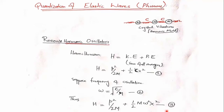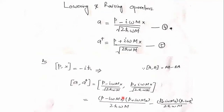Now we have the Hamiltonian and we introduce the ladder operators to quantize it. 'a' is the lowering operator and 'a†' is the raising operator. These are defined in terms of the position and momentum operators.